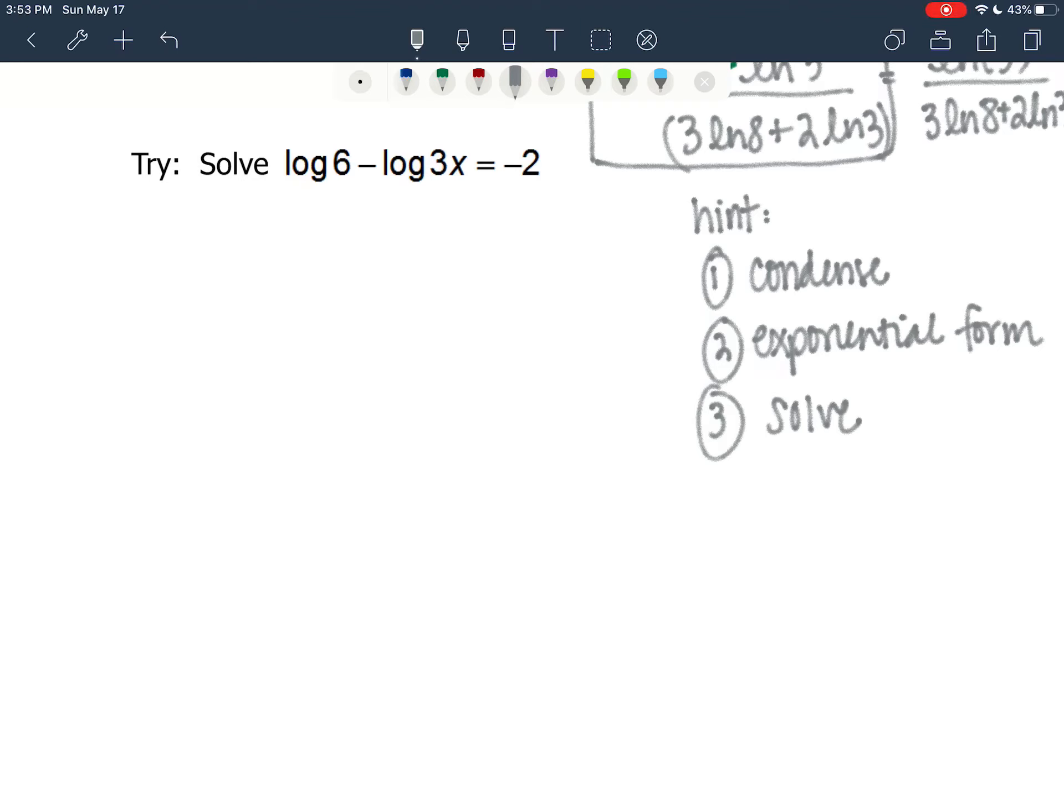Now it's time to see if you've got it. So here we have a try. We're going to solve log of 6 minus log of 3x equals negative 2.